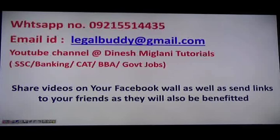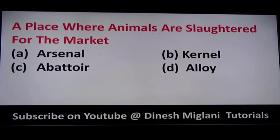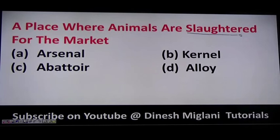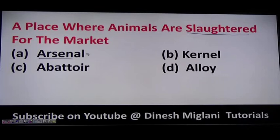Let us start with the series of one word substitution. The first question is: a place where animals are slaughtered for the market. The word 'slaughtered' means killed. The first option is arsenal — a place where weapons are kept. So that is not the answer.